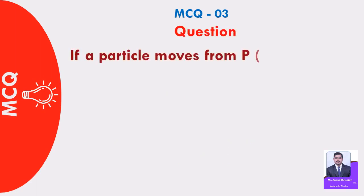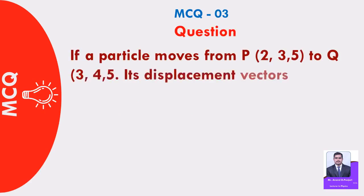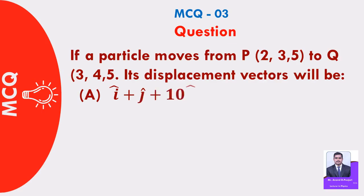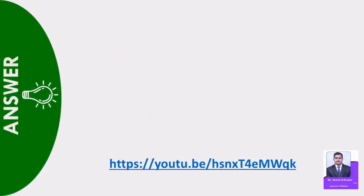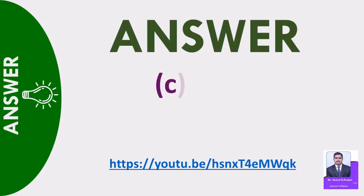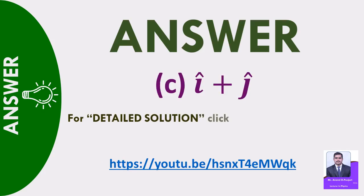MCQ 3: If a particle moves from P(2,3,5) to Q(3,4,5), its displacement will be: A) i cap plus j cap plus 10k cap, B) i cap plus j cap plus 5k cap, C) i cap plus j cap, D) 2i cap plus 4j cap plus 6k cap. Answer: C — i cap plus j cap. For detailed solution, click the links given in description.